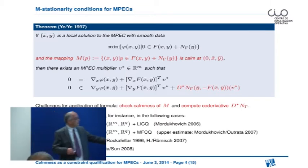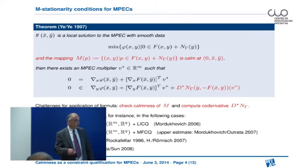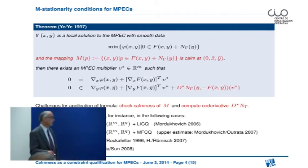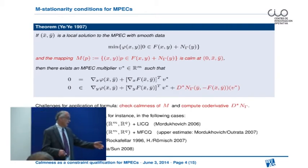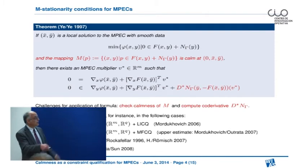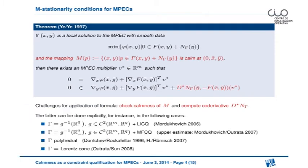For instance, if the set gamma is given by a finite number of C^2 inequalities as in nonlinear programming, then we have a fully explicit formula for the co-derivative. Another instance is a polyhedral set gamma, or gamma as a Lorentz cone. In all these cases you may end up with fully explicit stationarity conditions. Therefore I want to focus in my talk now on the verification of the calmness of this multifunction.